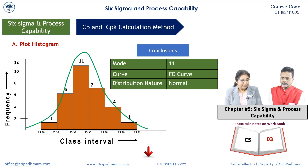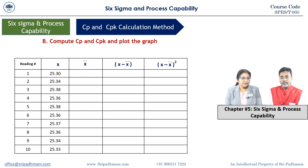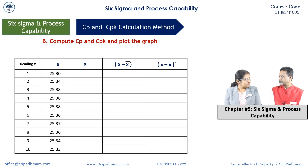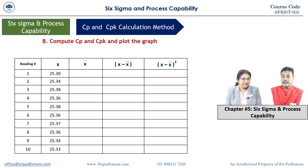Very important: sigma computation. If you want to use Excel or other software, you can. Japanese engineers encourage manual computation because it builds confidence. When using software, you only see the data and the result. We will do the manual method to develop skillsets. Nothing wrong in using software, but manual builds better understanding.